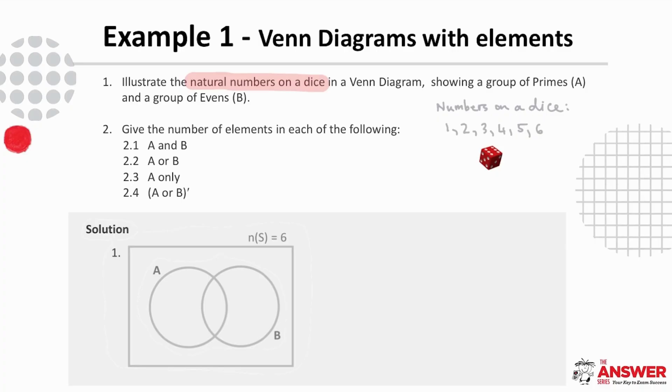Now we can draw in our circles representing event A the prime numbers and event B the even numbers. If we now systematically go through the numbers on the dice we can decide where they each belong. One is neither prime nor even so it gets placed in the sample space but outside both circles. 2 is both prime and even so it gets placed in the overlap. 3 is prime, 4 is even, 5 is prime and 6 is even. And there is your Venn diagram.